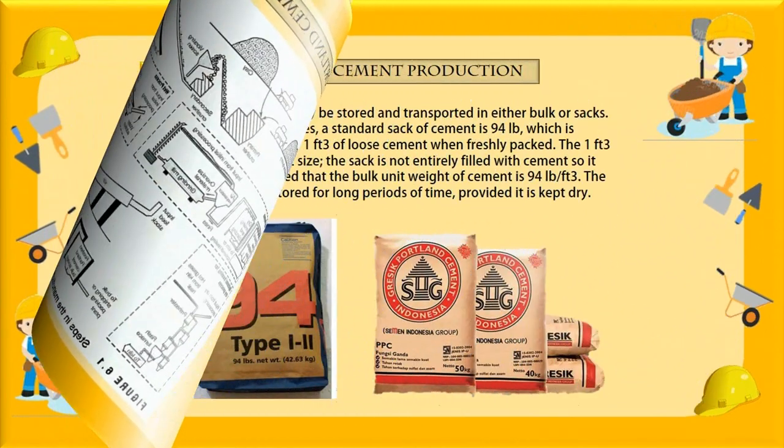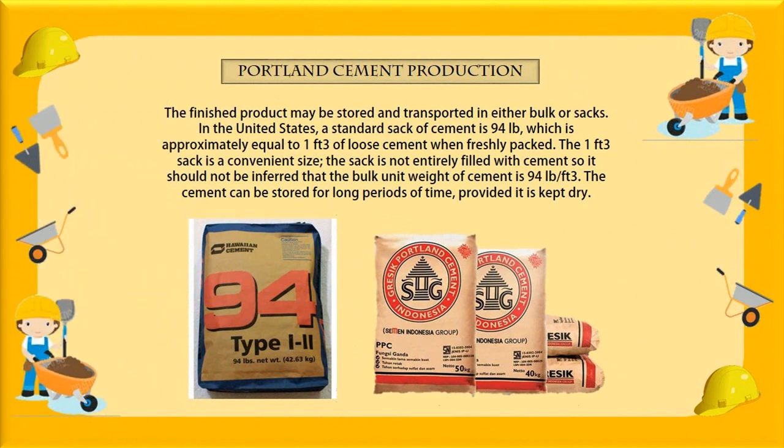The finished product may be stored and transferred in bulk or in sacks. In the United States, a standard sack of cement is 94 pounds, which is approximately equal to 1 cubic foot of loose cement when freshly packed. The 1 cubic foot sack is a convenient size; the sack is not entirely filled with cement, so it should not be inferred that the bulk unit weight of cement is 94 pounds per cubic foot. The cement can be stored for long periods of time, provided it is kept dry.